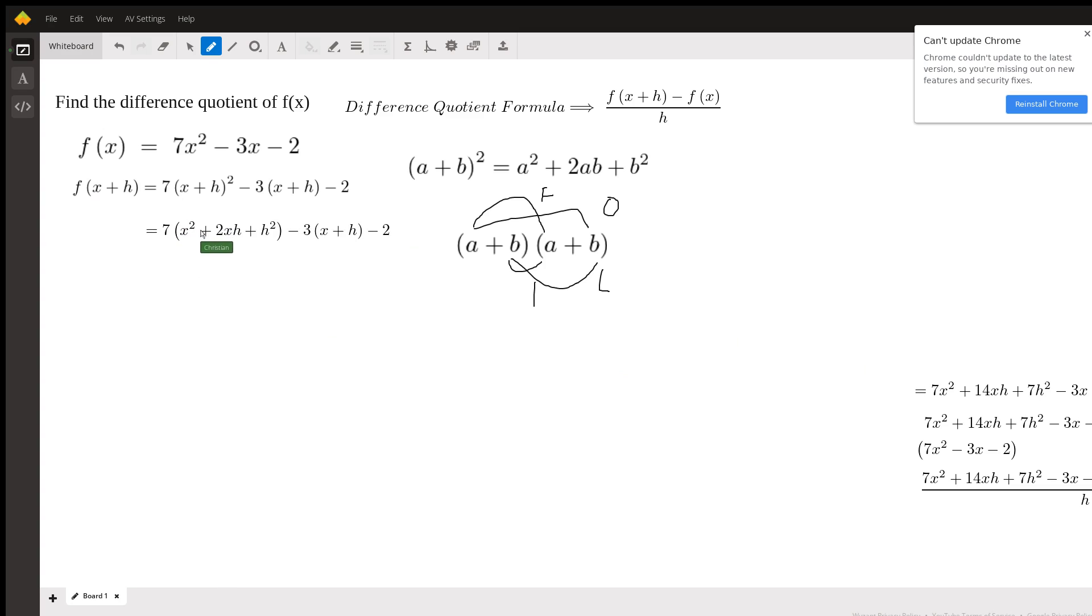We have the term 7 multiplied into x² + 2xh + h², and so once you take these constants and you multiply them in, you end up with this result right here. So now we have f(x+h) equal to this.